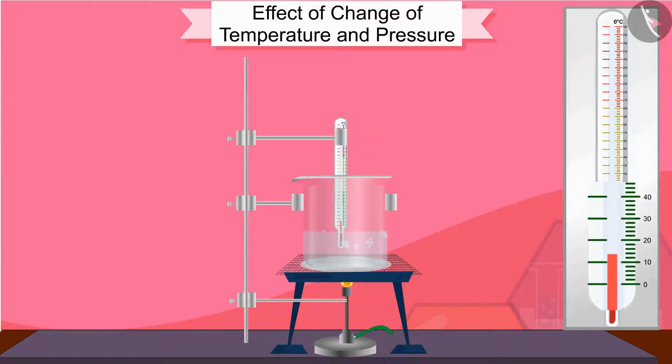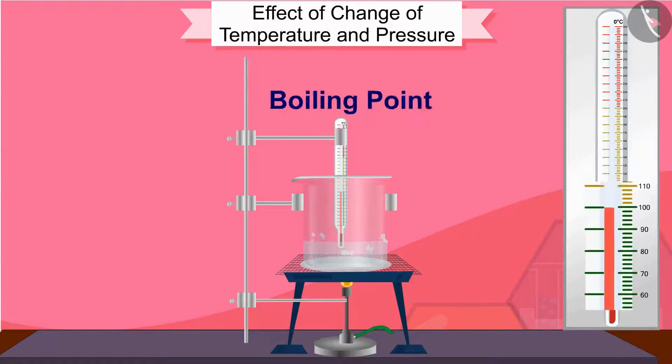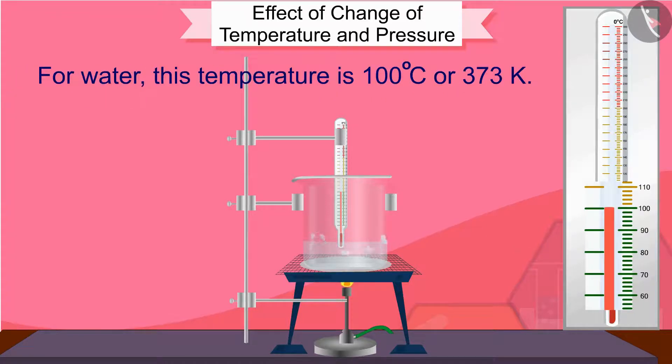The temperature at which the liquid starts boiling at atmospheric pressure is called its boiling point. Boiling is a bulk phenomenon. Particles from the bulk of the liquid gain enough energy to change into the vapor state. For water, this temperature is 100 degrees Celsius or 373 Kelvin.